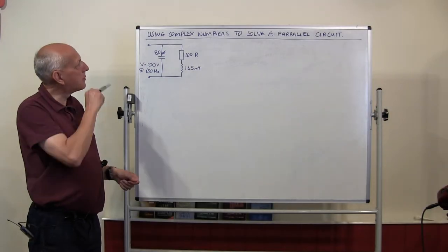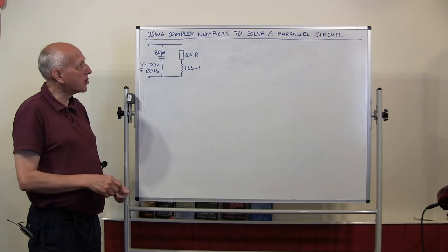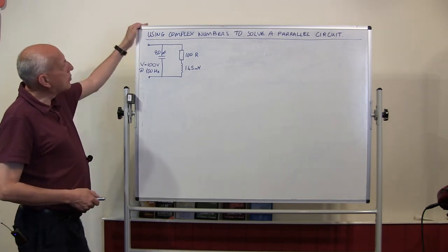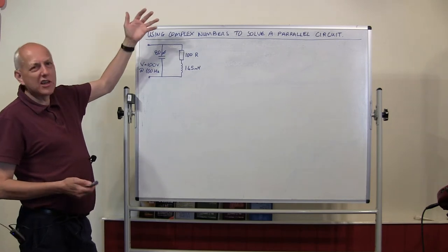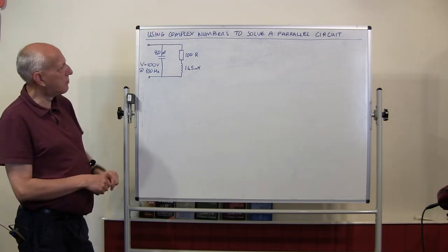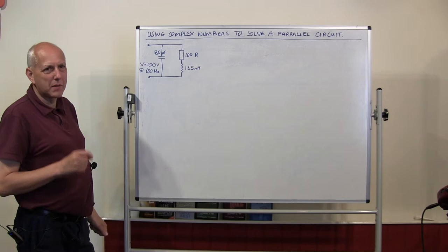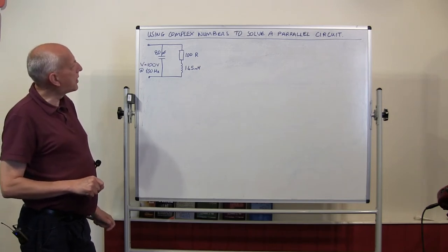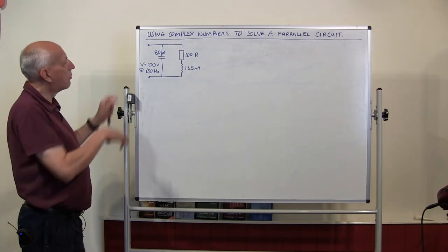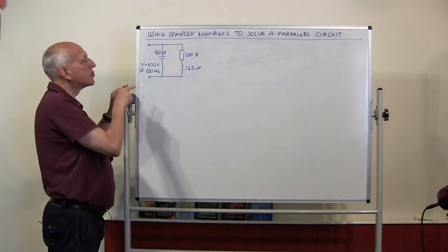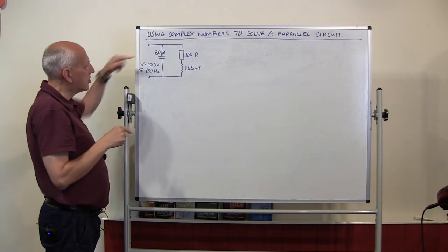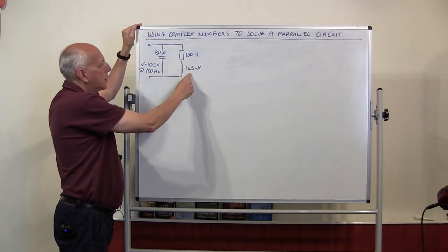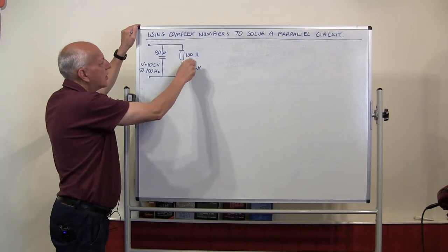Welcome. In this presentation we're going to be looking at how we can use complex numbers to solve a parallel circuit. We've got a circuit here with a capacitor, a resistor, and an inductor. We're going to find out what the actual impedance of this circuit is as you look into it.